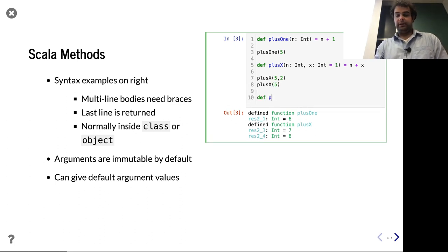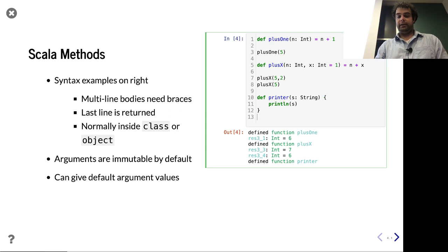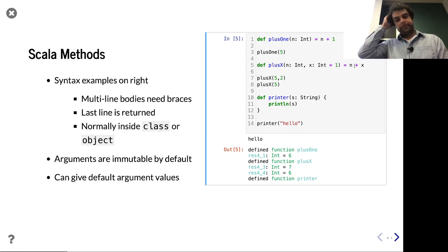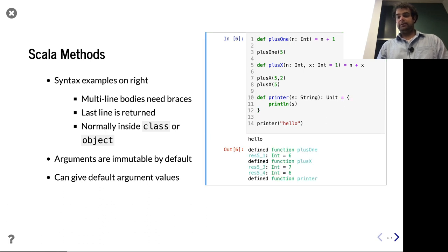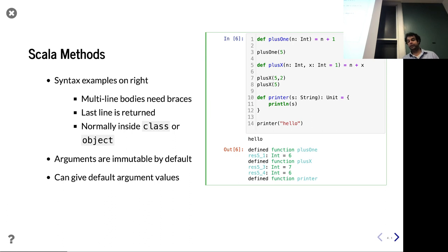Let's say I want to make a printing function that takes a string — it's not going to return anything, just printing. This one doesn't have an equals or a return value because it doesn't return anything. Some style guides discourage this and encourage you to have everything have an explicit return type. In that case, you can say it's `Unit` — Scala's equivalent of void. For type inference, a lot of times it's pretty clear, like a one-line function with an int argument. Putting the type explicitly can make it more cluttered. But for recursive functions, you are required to give the type.